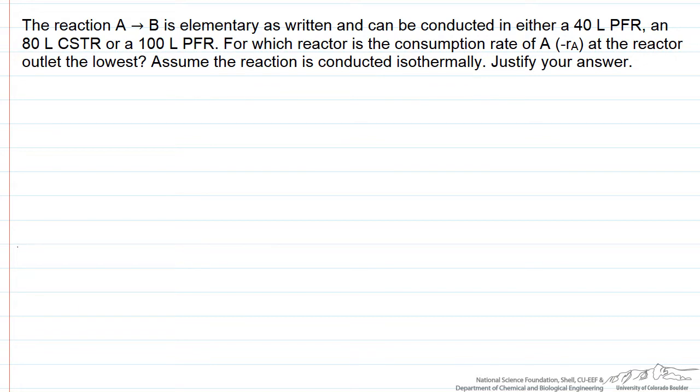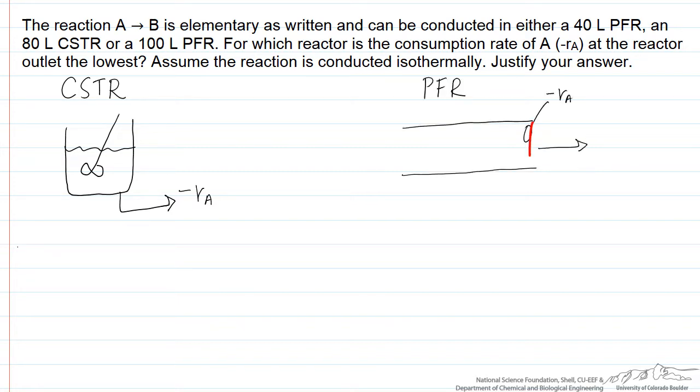In a CSTR, the outlet conditions where we want to determine that reaction rate are everywhere the same inside the reactor. In the case of the PFRs, we're trying to determine the reaction rate right before we exit the reactor - what's going to have the lowest reaction rate.